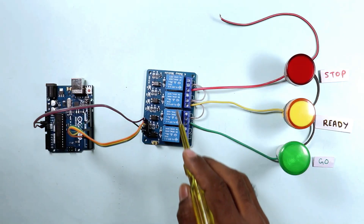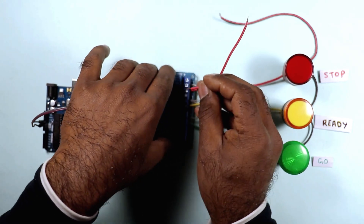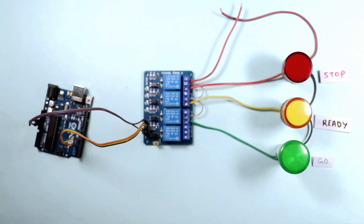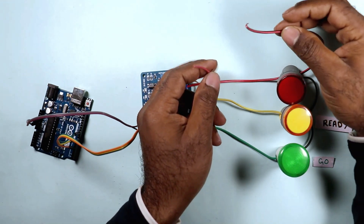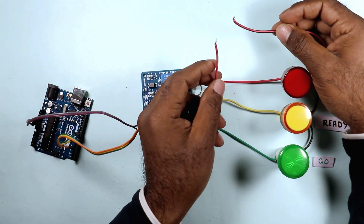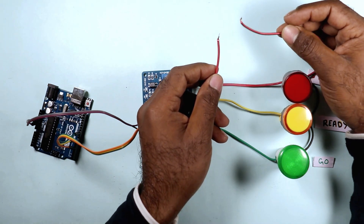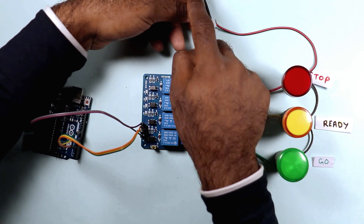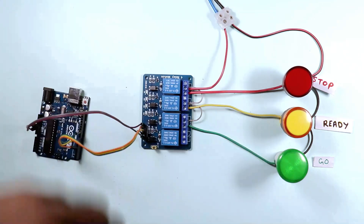On the common terminal of these three relays we have to connect the phase supply. I am connecting a wire with the common terminal of relay number one. Now this phase supply wire and the neutral power supply wire need to be connected to 230 volt AC power supply. I connected phase supply and neutral supply to these two terminals, so our wiring connection is completed.